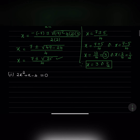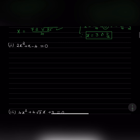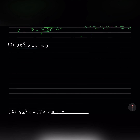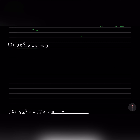Let us start with the second one. It is 2x squared plus x minus 4 equals 0. We will write down the formula so that it becomes easy for us. x equals minus b plus or minus square root of b squared minus 4ac divided by 2a. Now a is 2, b is 1, and c is minus 4.